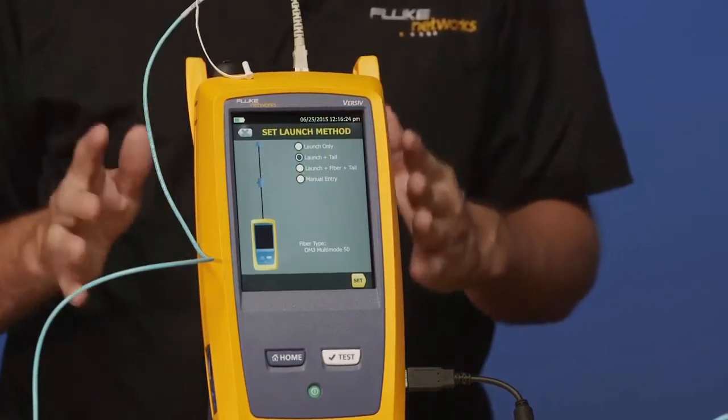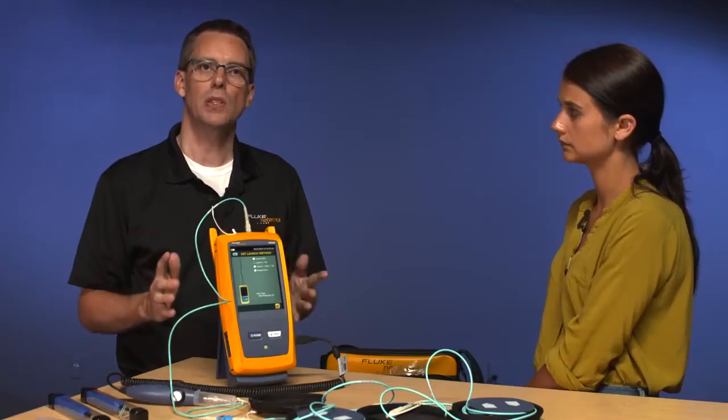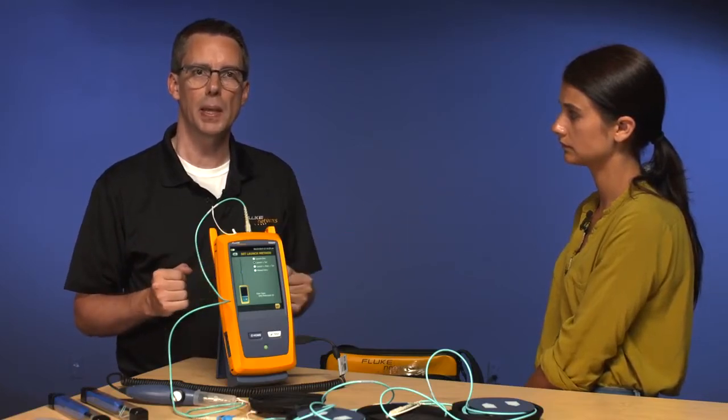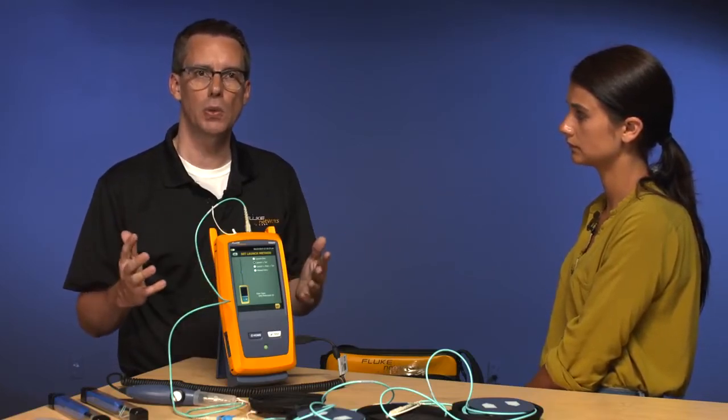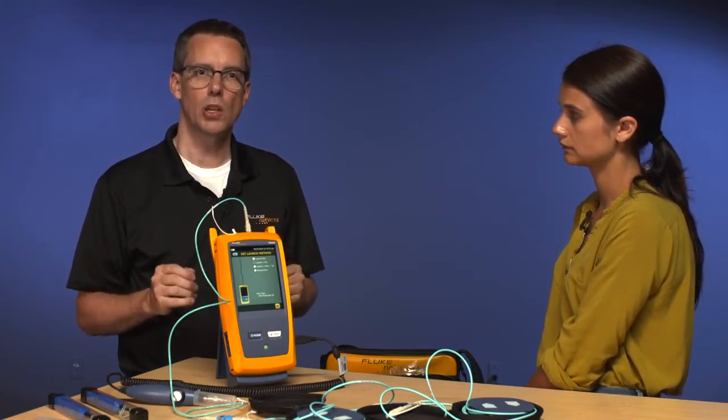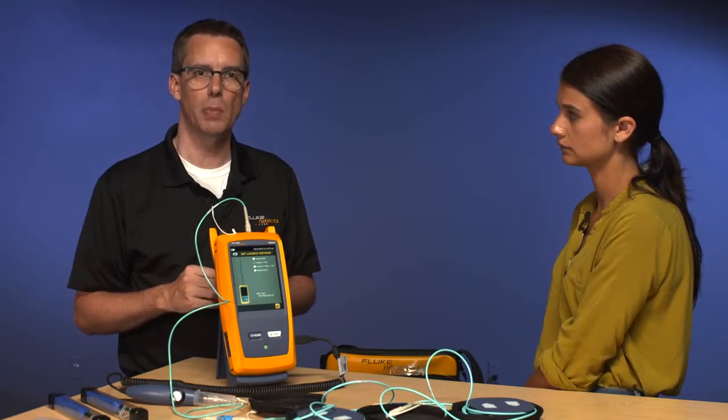That third option, launch plus fiber plus tail, is one of those instances if you forget to do this, you drive to the other end of your fiber link, and you think, I forgot to do this. This tester is smart enough to set the launch compensation when you're actually attached to the fiber.